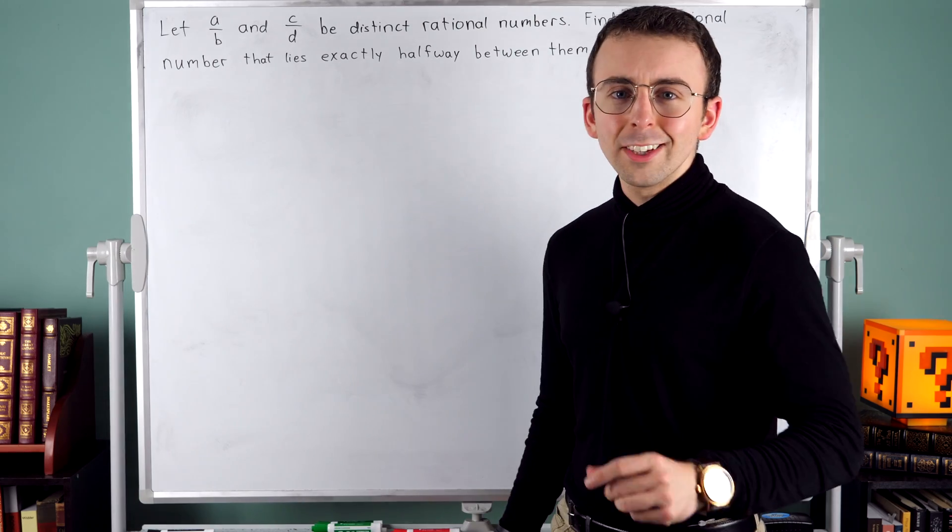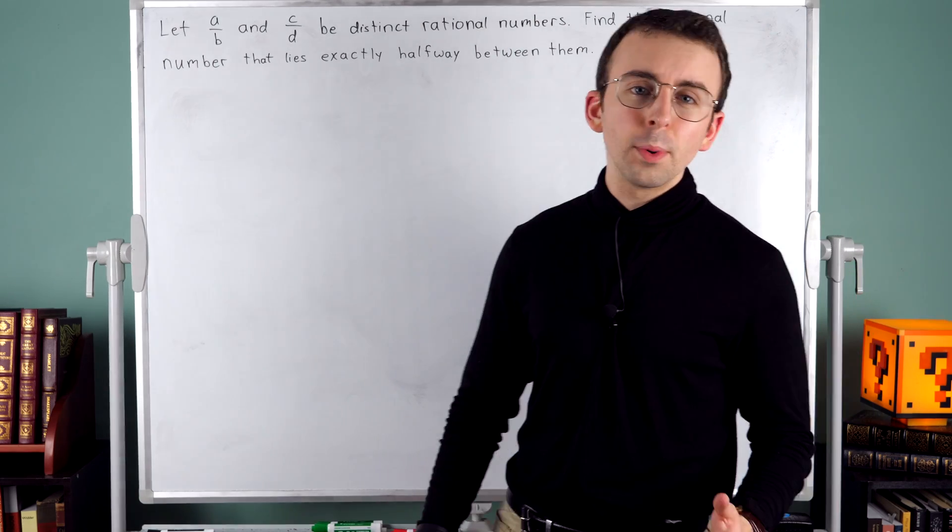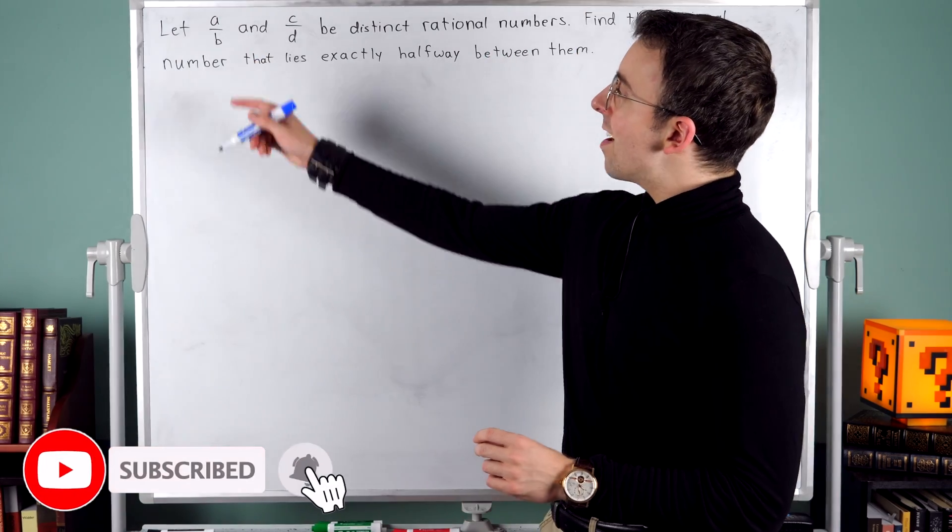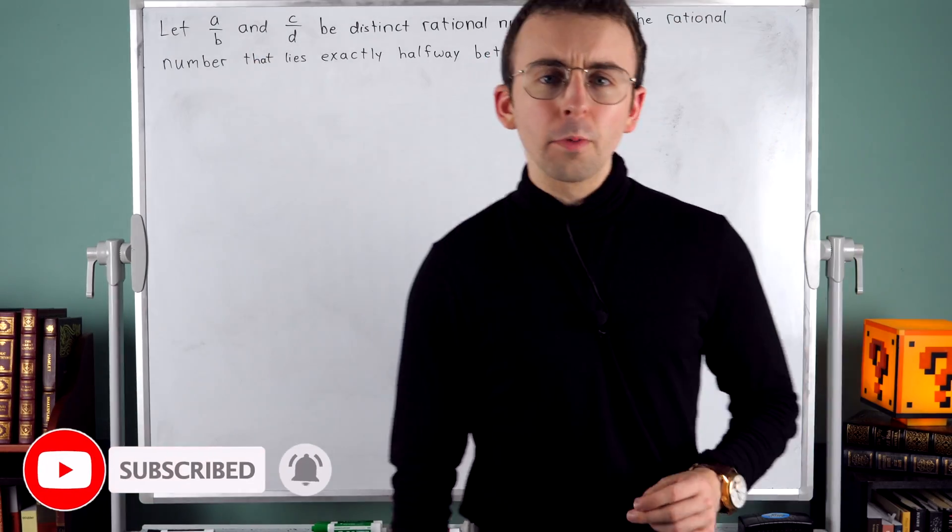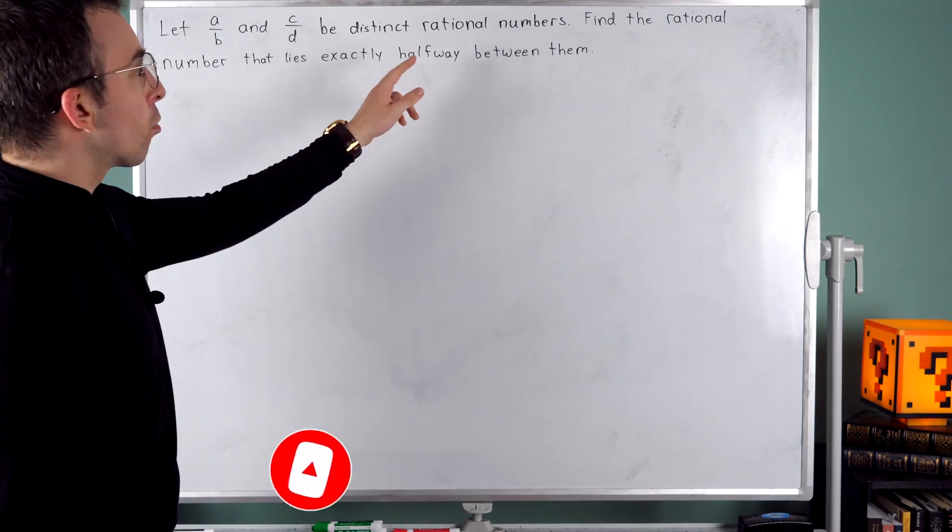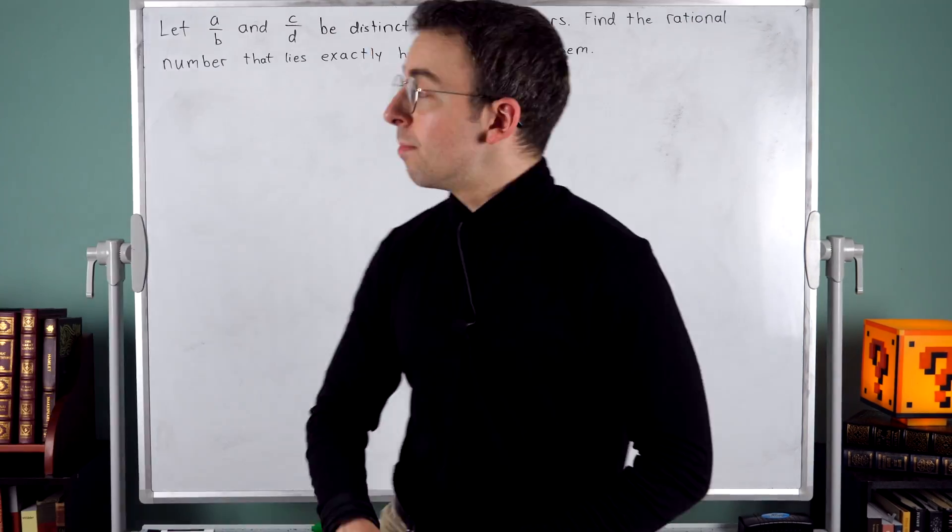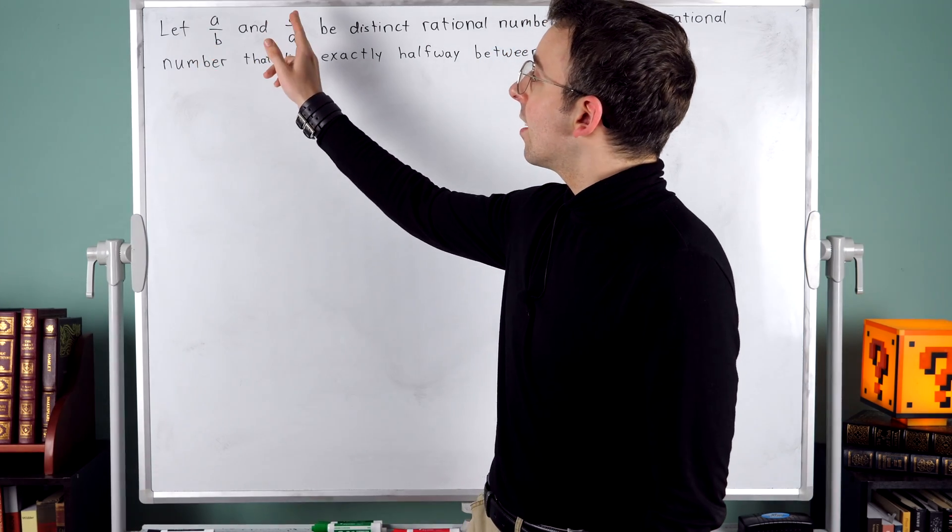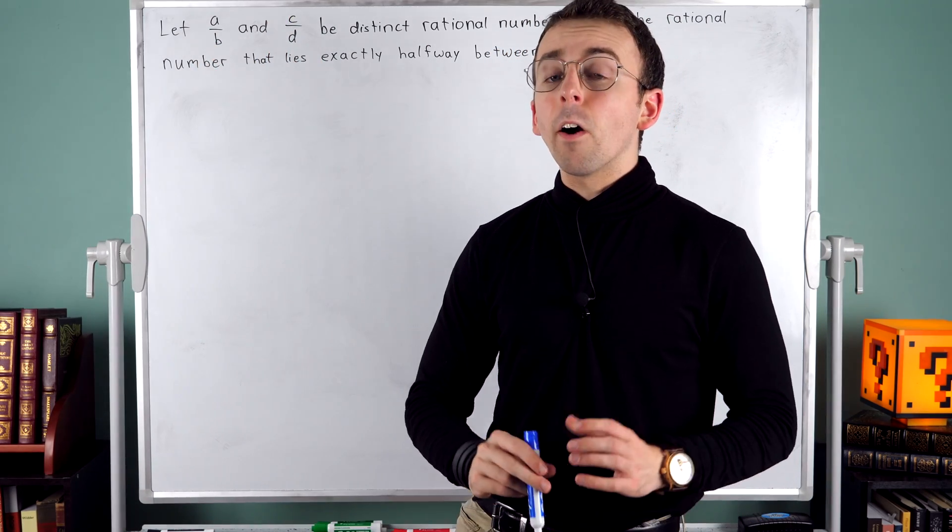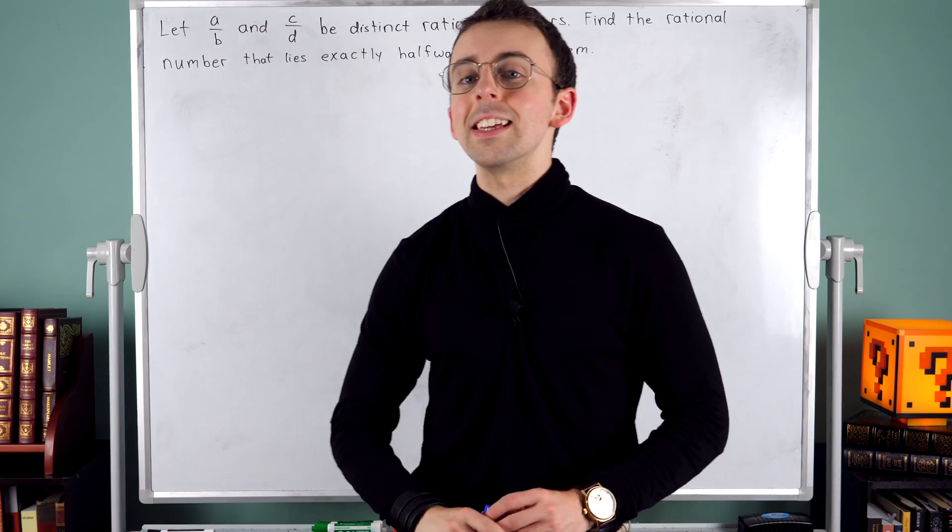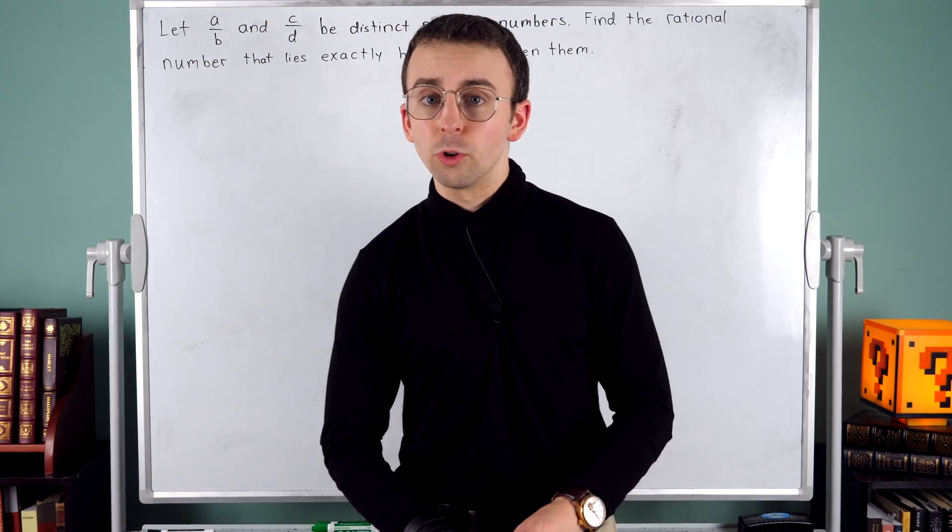Hi there. Here's a challenge exercise from the textbook Algebra 2 by Larson. Let A over B and C over D be distinct rational numbers. Remember that being rational numbers means that A, B, C, and D are all integers.